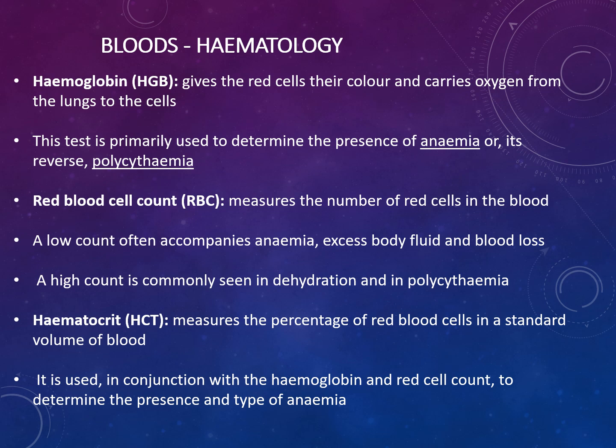You also have something measured called a haematocrit, which measures the percentage of red blood cells in a standard volume of blood. It is used in conjunction with the haemoglobin and red blood cell count to determine the presence of anaemia.